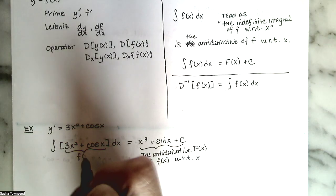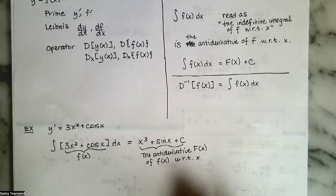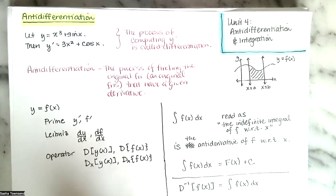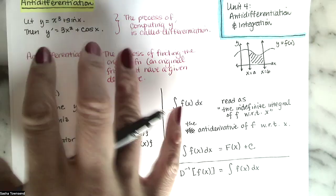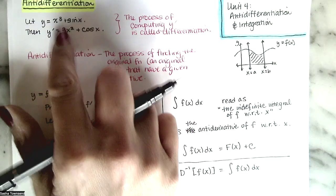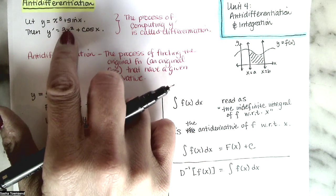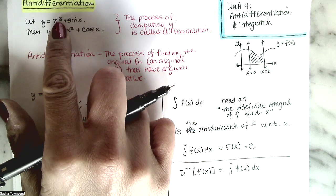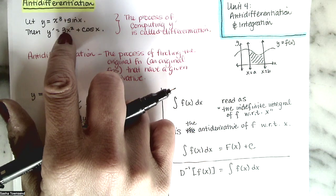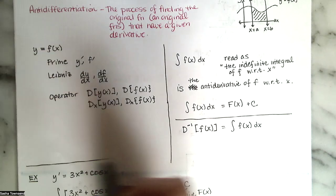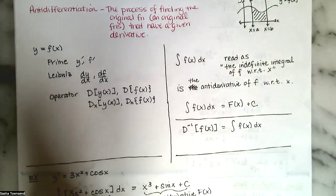As an example, if y prime equals 3x squared plus cosine of x and we want the original function y, we compute the anti-derivative of 3x squared plus cosine of x. We ask: what do I take the derivative of to get 3x squared? x cubed works, because the derivative of x cubed is 3x squared. What do I take the derivative of to get cosine of x? Sine of x. Then we add plus c.